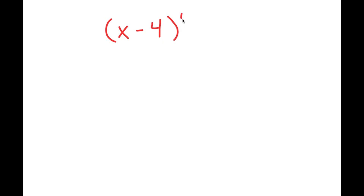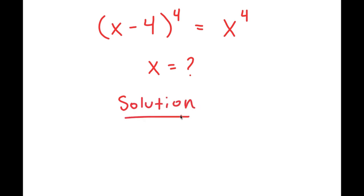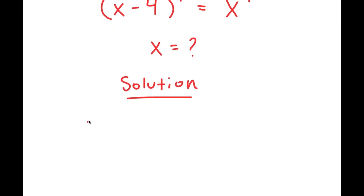In this video, I'm going to be solving the equation (x minus 4) to the power of 4 is equal to x to the power of 4. My only variable is x, so that's what I'm solving for. The first thing I'm going to do is rewrite this equation as (x minus 4) to the power of 2 times 2 is equal to x to the power of 2 times 2.